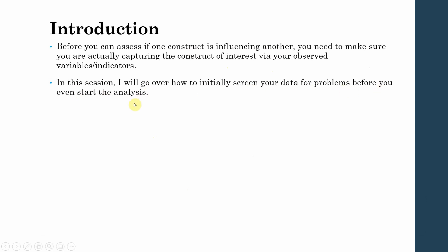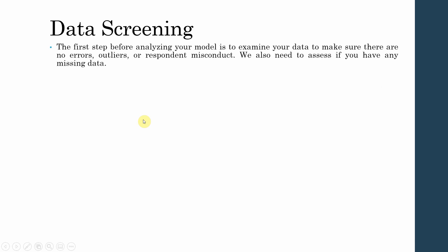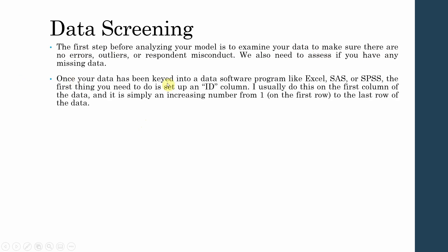In this session, I will go over how to initially screen your data for data problems before you even start your analysis. The first step before analyzing your model is to examine your data to make sure there are no errors, outliers, or respondent misconduct. You also need to assess if you have any missing data and how to sort out problems relative to your missing data. Once your data has been keyed into software programs like Excel, SAS, or SPSS, the first thing you need to do is set up an ID column.